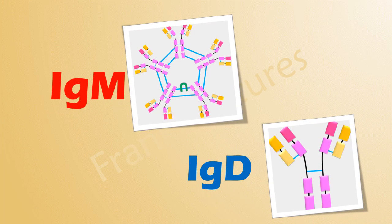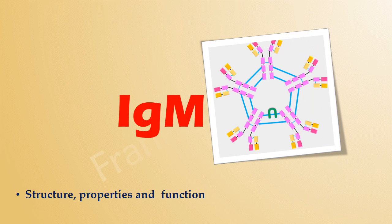Let's talk about IgM and IgD. Both of these are membrane-bound immunoglobulins found on the surface of mature naive B cells. Let us now study their structure, properties, and function.